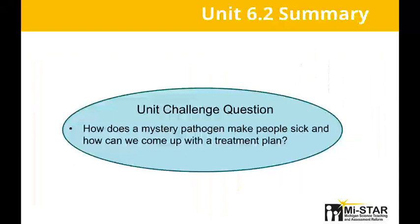We've now looked at all the lessons in Unit 6.2. Let's recap a few key points. Unit 6.2 is built around the concept of biological systems and subsystems based on structure and function, with an emphasis on the interaction of cells, tissues, organs, and organ systems at their various scales. As students address the unit challenge, they identify how evidence can be used to trace the source of a pathogen and how to determine different types of pathogens. Students study organ systems down to the cellular level and use their understanding to determine the organ system affected by the RAD pathogen. They then learn about tissue engineering and how solutions could be implemented to help their teachers.